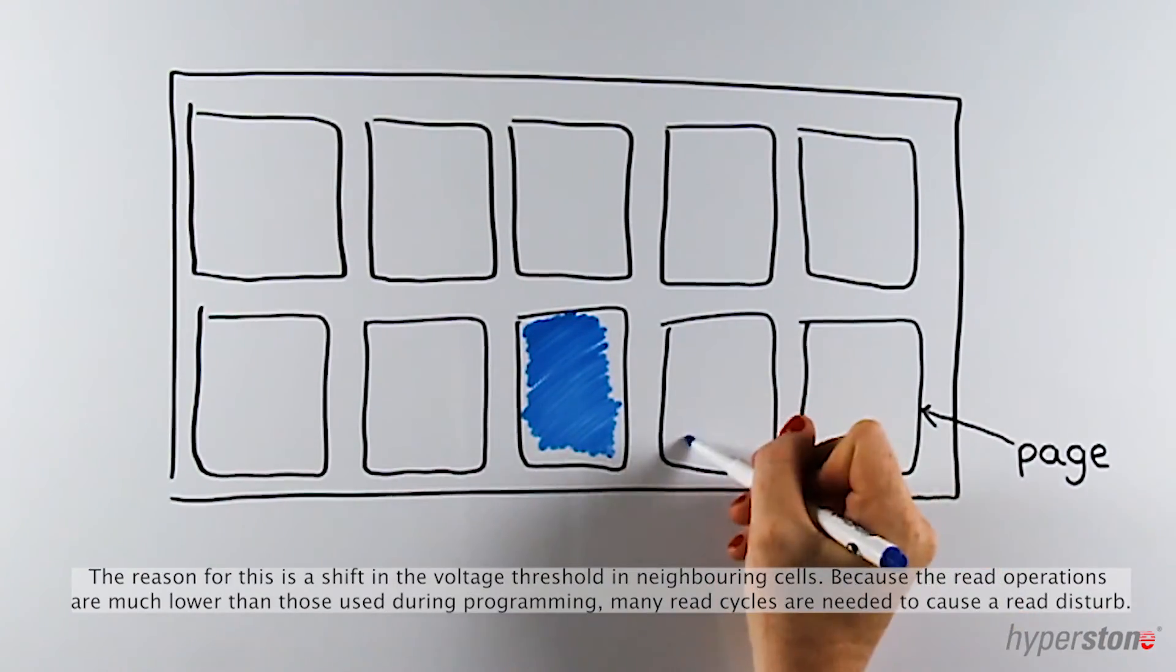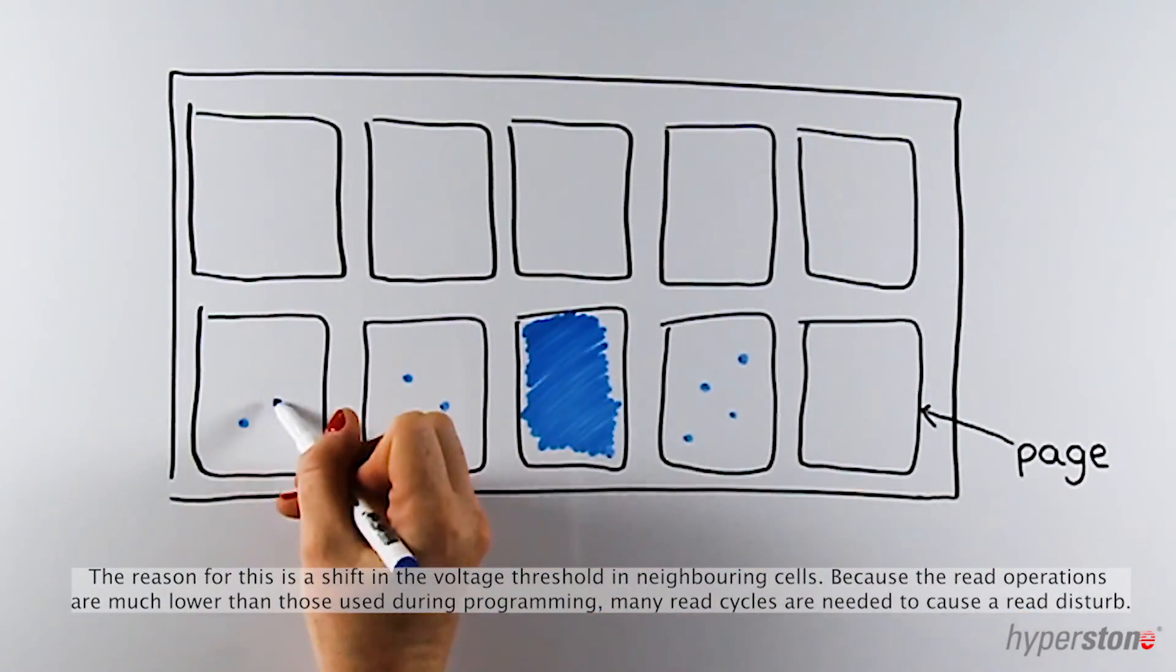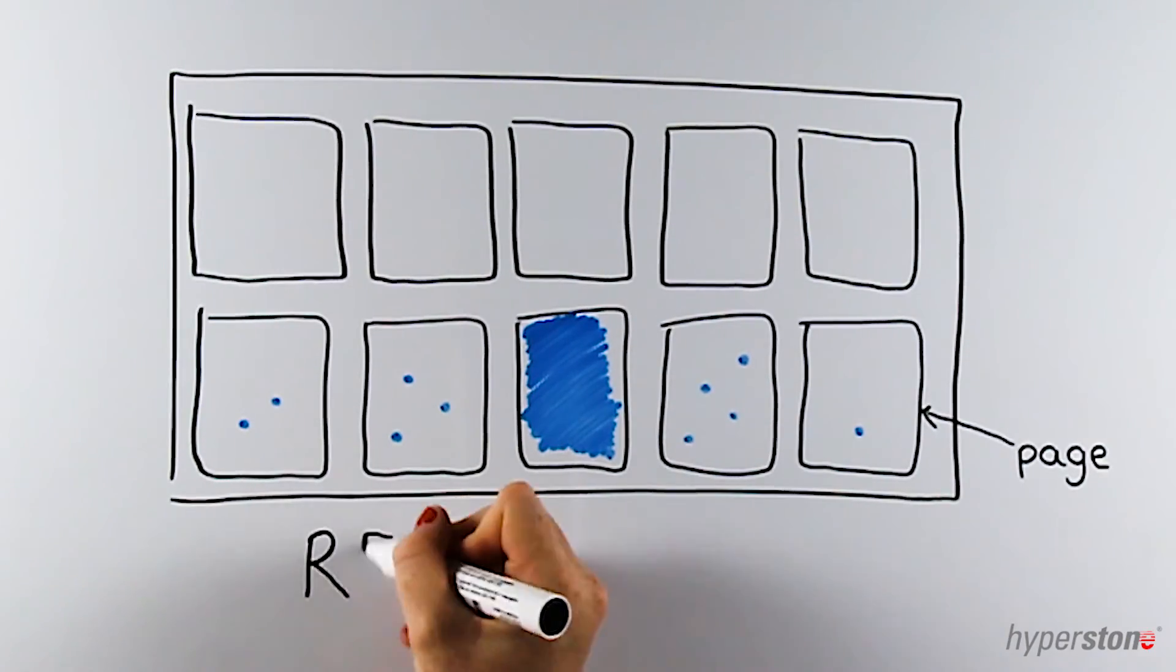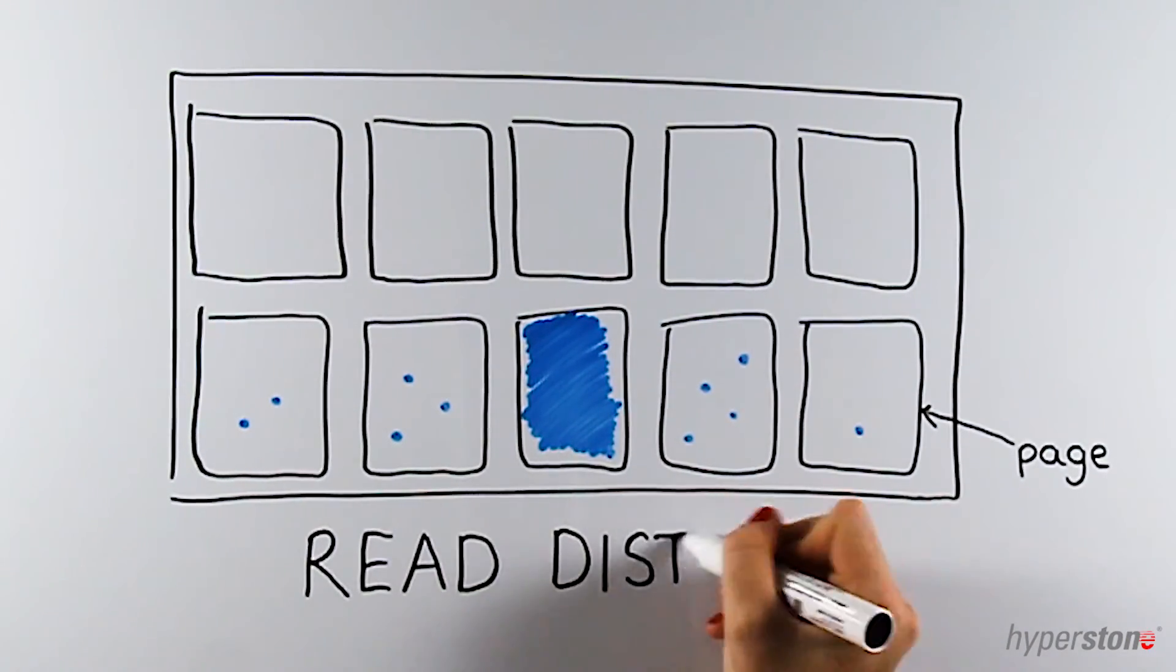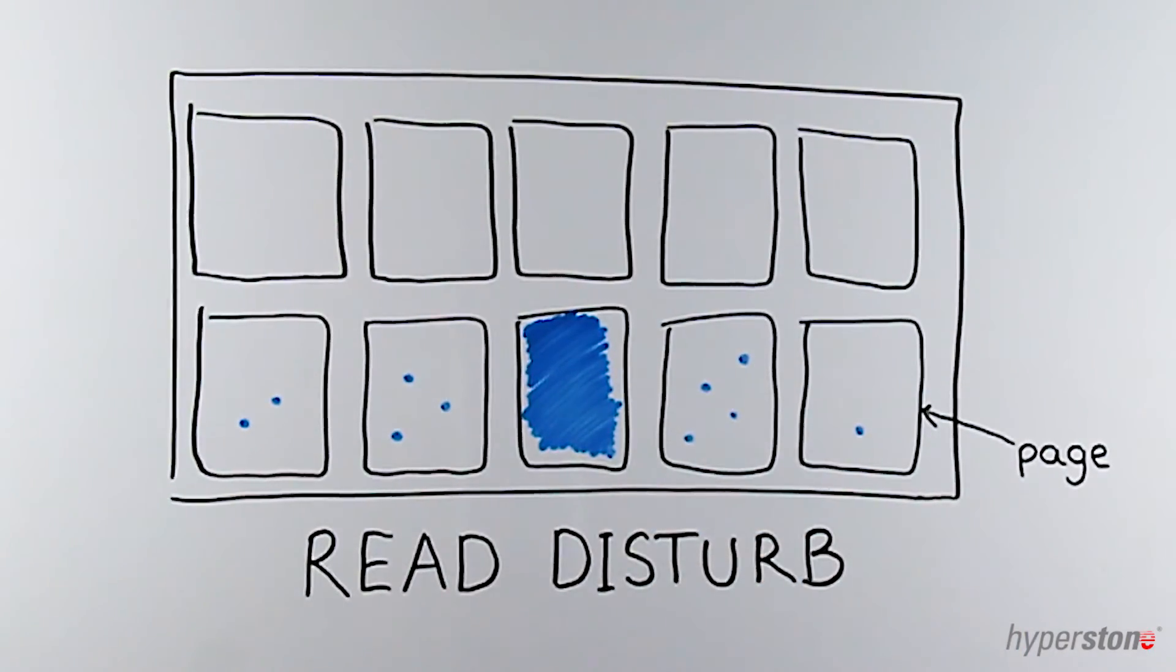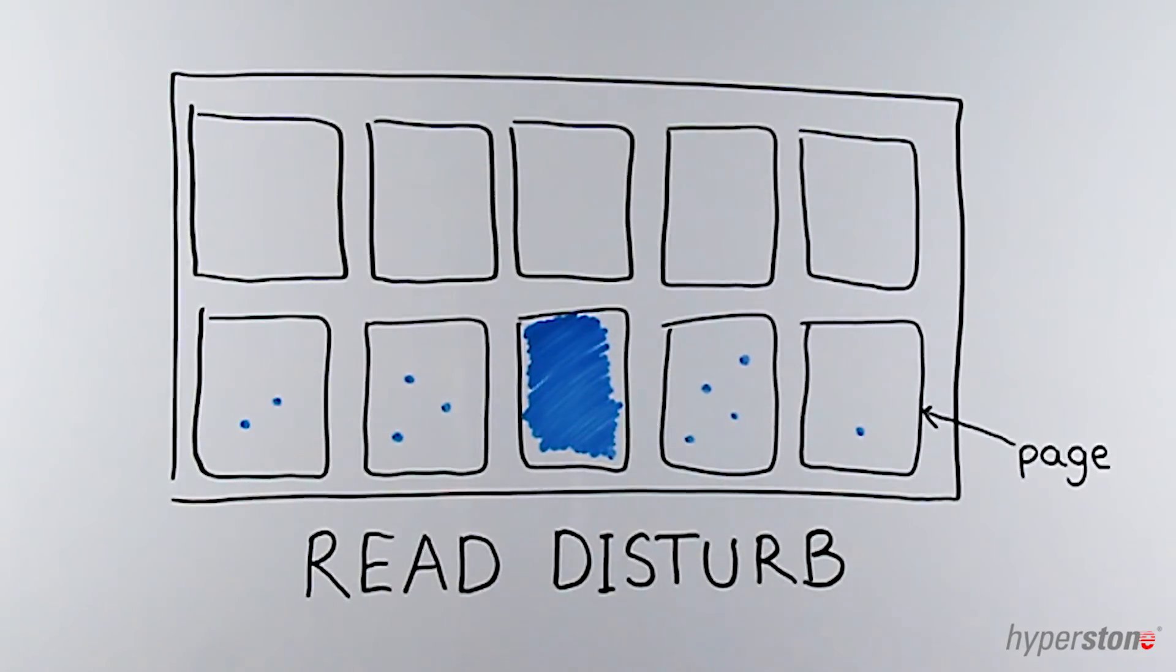The reason for this is a shift in the voltage threshold of the neighboring cells. Because the voltages of read operations are much lower than those used during programming, many read cycles are needed to cause a read disturb.